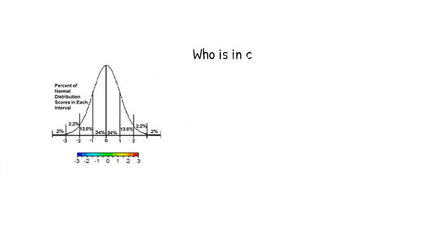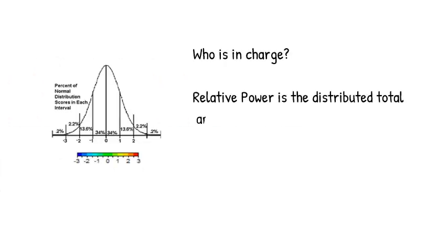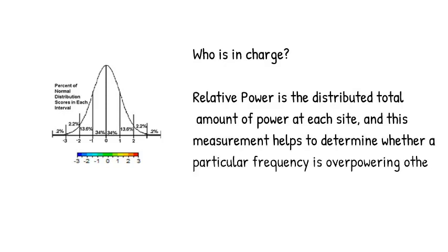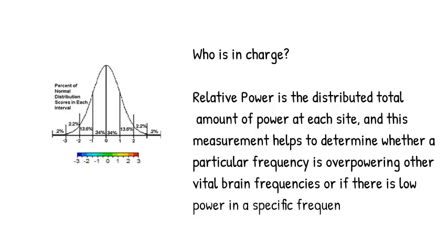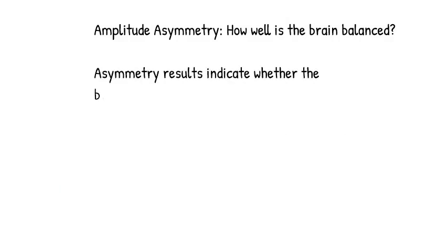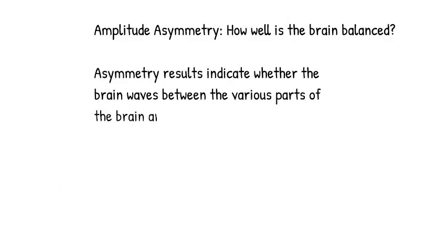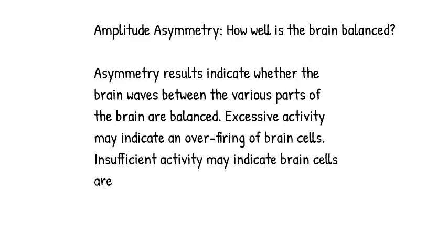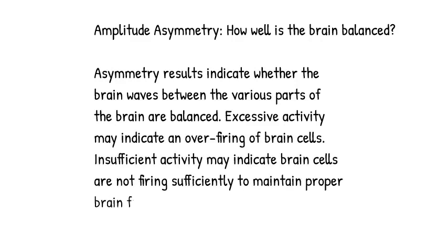The QEEG gives us a measure of relative power so we can see how power is distributed across the different frequency bands. It also gives us a measure of amplitude asymmetry, indicating whether the brainwaves between different parts of the brain are balanced.